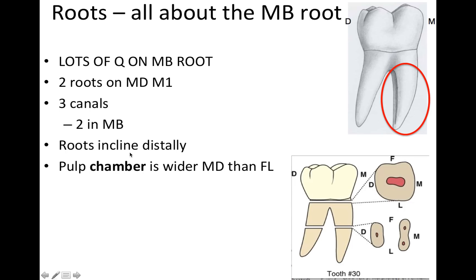When exam questions involve roots of the mandibular first molar, they frequently test on the mesial buccal root. This tooth has two roots and three canals; the mesial root contains two canals. The roots incline distally. The pulp chamber — distinct from the pulp canal — is wider mesial-distally than facial-lingually, as seen in cross-section.